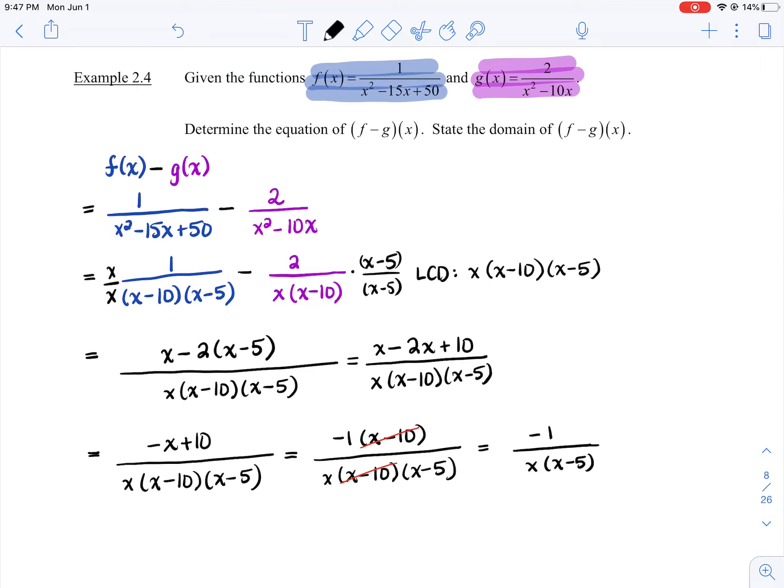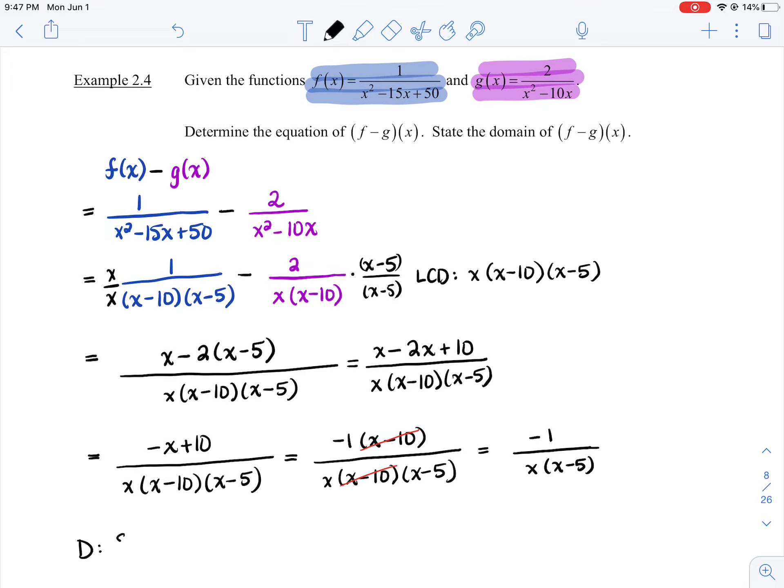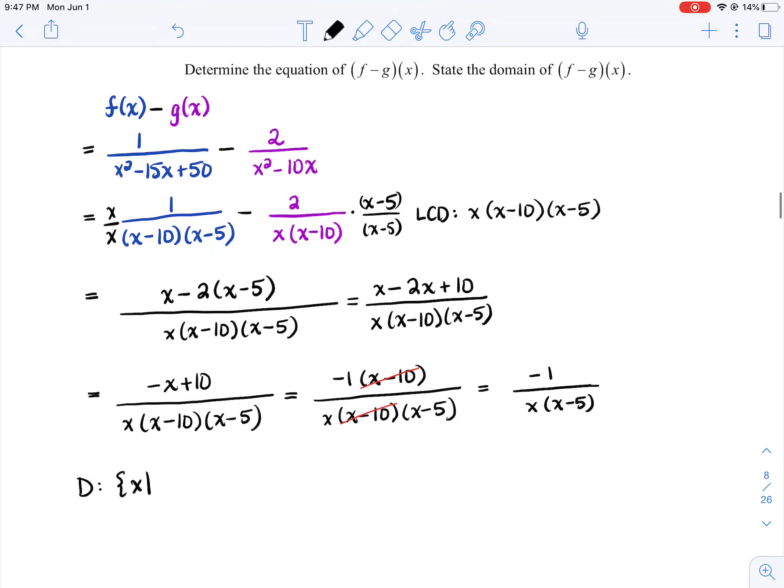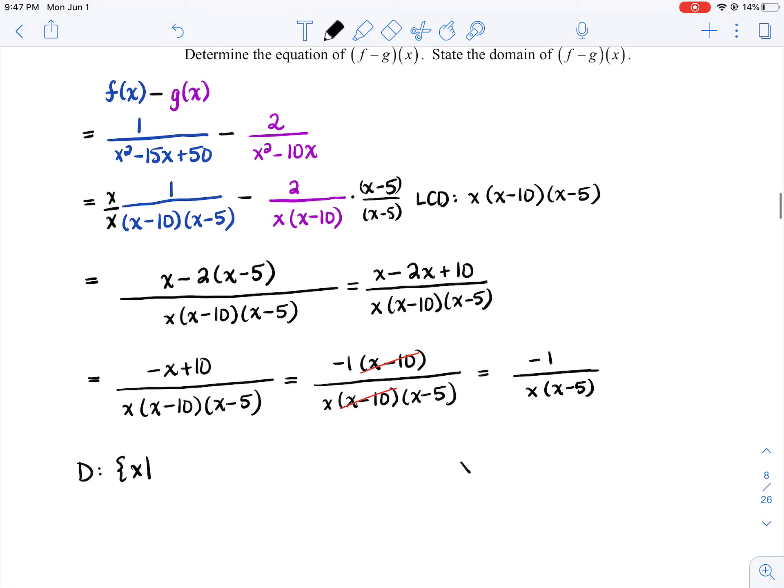Okay, we just need the domain. So what's the domain of f minus g? Well, you basically want to look at what's ever been in the denominator's position. So we've got x. So x can't equal 0. That was in the denominator. x minus 5 can't equal 0 because that was in the denominator. As was x minus 10.